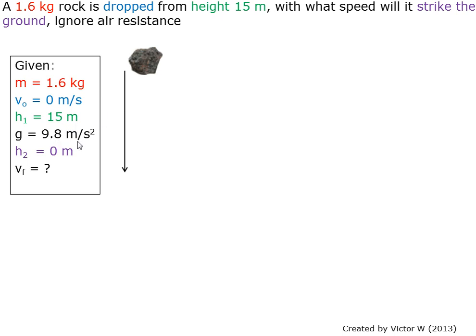g is 9.8 meters per second squared. Final height is 0 meters, and we are looking for the final velocity.